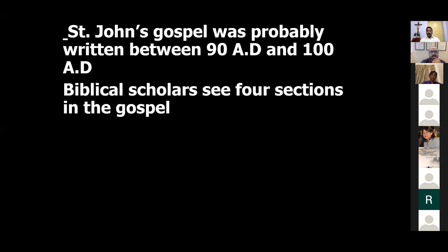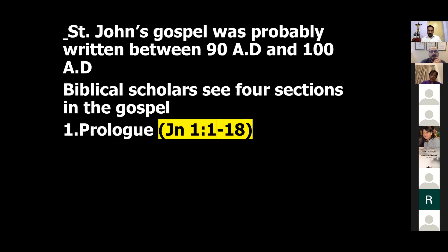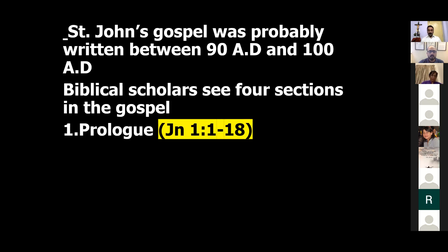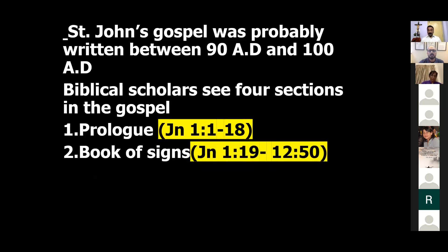Biblical scholars see four sections in the Gospel of St. John. Number one is the prologue, which appears in chapter 1, verses 1 to 18. The second is the book of signs, from John chapter 1 verse 19 to John chapter 12 verse 15, where the seven signs are mentioned.